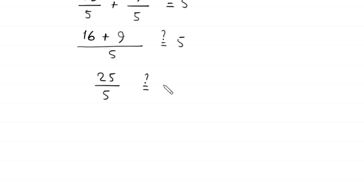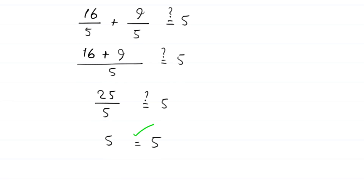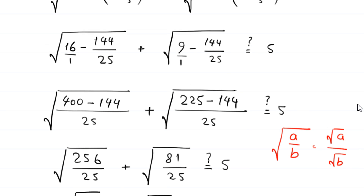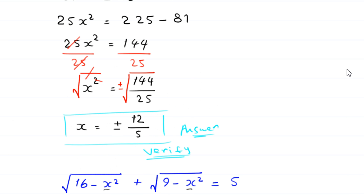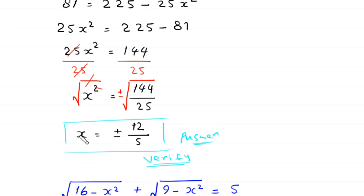So we get (16 plus 9) over 5 equals 25 over 5 equals 5, which equals 5. The left hand side equals the right hand side, confirming that x equals plus or minus 12 over 5 is indeed a valid solution.